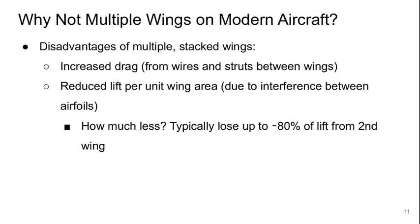There are good reasons we don't still do this today, because the price one pays is very high. It increases drag significantly, basically from the wires and struts between the wings that keep the system held together. It also reduces the lift produced per unit surface area of the wing, due to interference between the airfoils. You would typically lose up to 80% of the lift from the second wing, so you might get only 20% extra by adding that whole second wing — kind of a losing proposition.